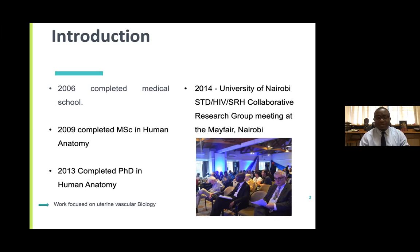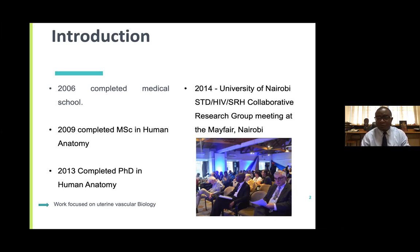I joined the department as a tutorial fellow in 2007. While I studied human anatomy and completed the degree, I went ahead to pursue my PhD in human anatomy. My research at both the MSc and PhD level focused on uterine vascular biology. I basically wanted to understand the adaptation of the uterine vascular system — the blood supply of the uterus and how it adopts different physiological states: from a young girl, through puberty, reproductive age, pregnancy, and old age. How does the uterine artery adapt to ensure good reproductive performance?